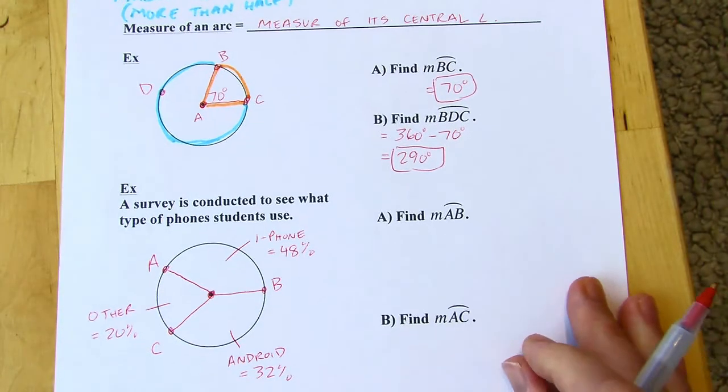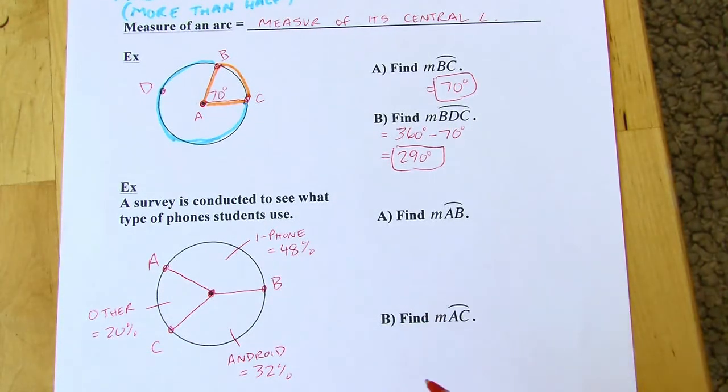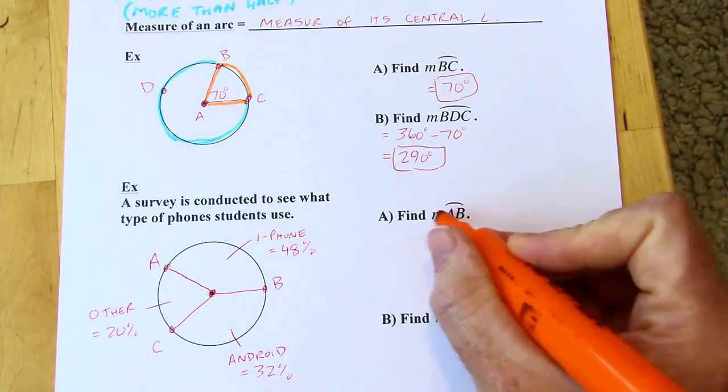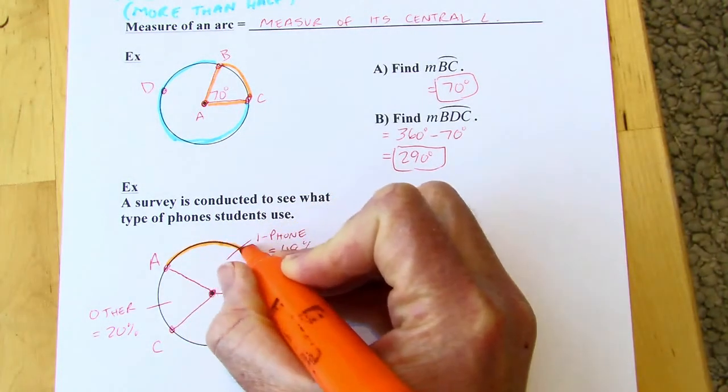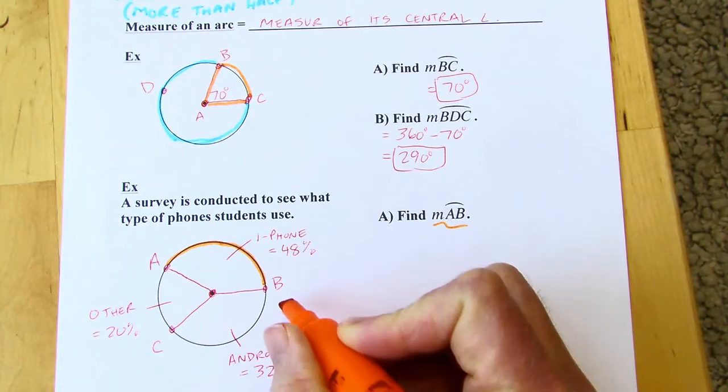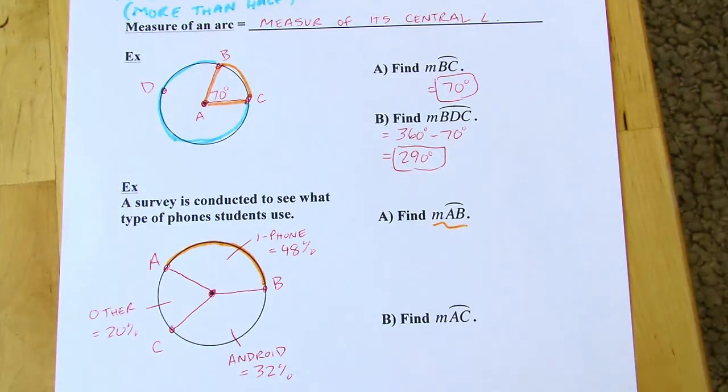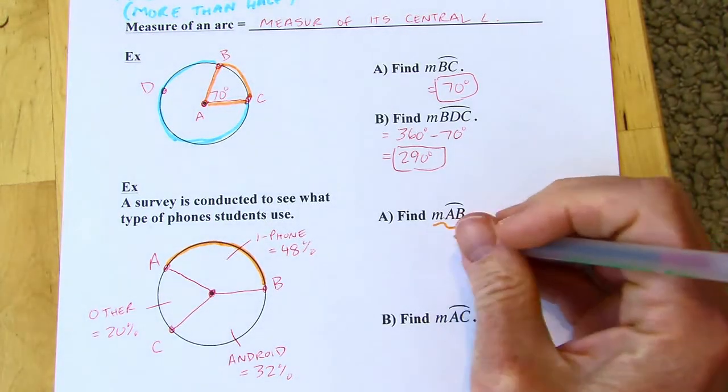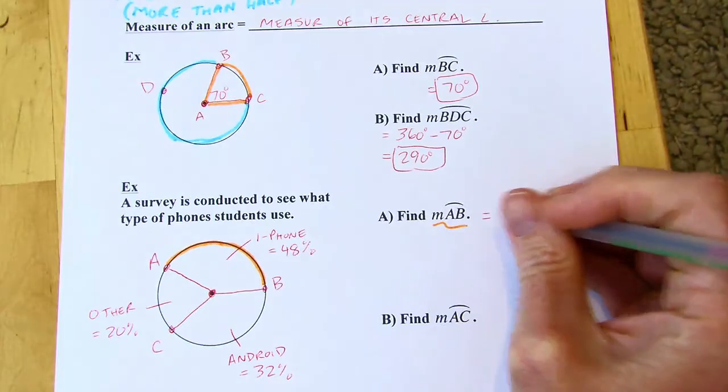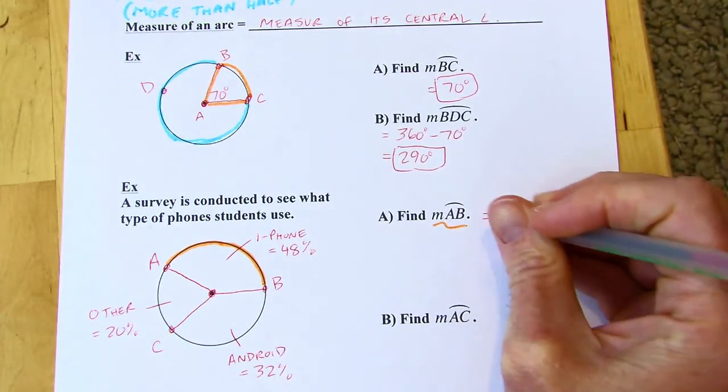So then the question is to find the measure of the arcs. So first we're looking at arc AB. So arc AB is this arc, right? I know it's always going to be the minor arc. You could go from A to B that way, but then that would be a major arc. So there's my minor arc. And the common mistake is people will just look at the 48 and they'll say, oh, it's 48% of the circle. So that means that this is 48 degrees. And that's incorrect.